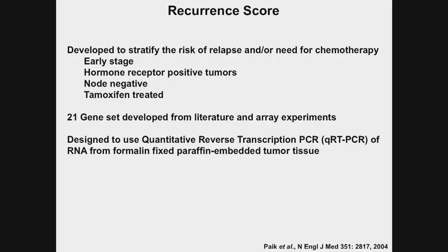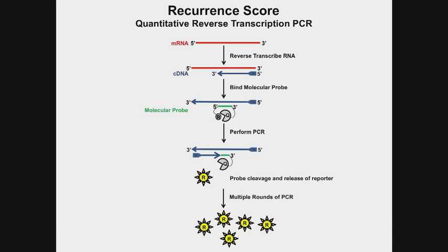What they did was develop a 21-gene set assay by culling the literature and microarray experiments, then designed a quantitative reverse transcription PCR assay from formalin-fixed paraffin-embedded tumor tissue. This assay starts with RNA from a tumor sample and uses the enzyme reverse transcriptase to turn that RNA into a copy known as cDNA — a DNA copy of the RNA.